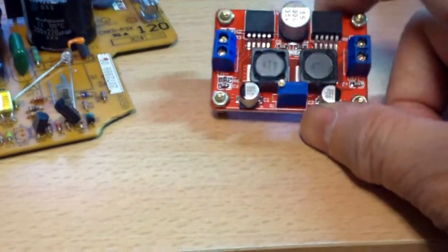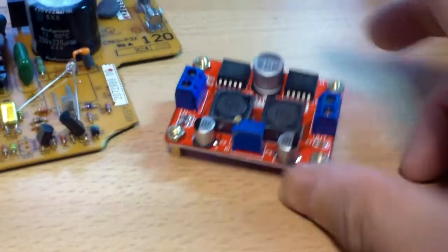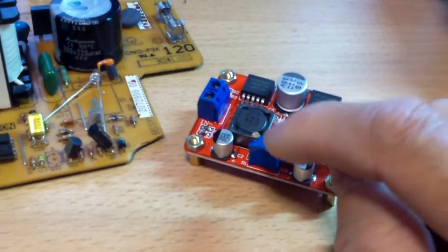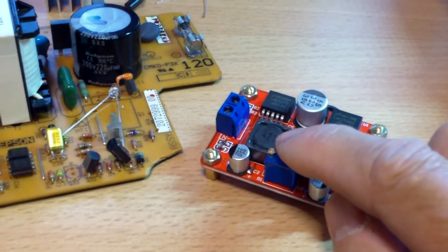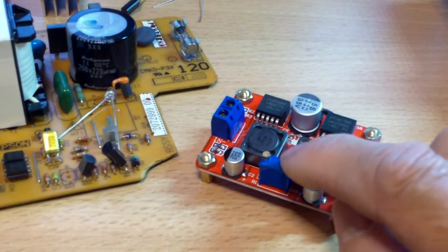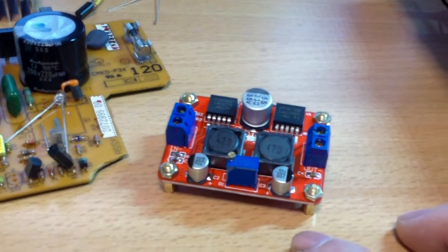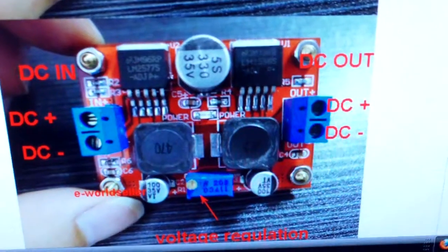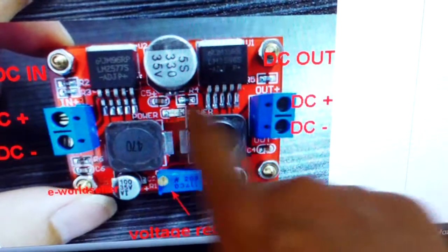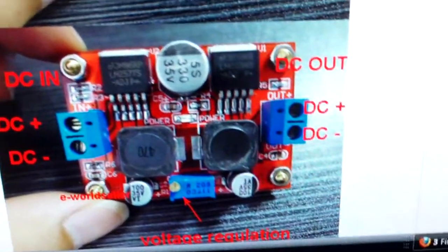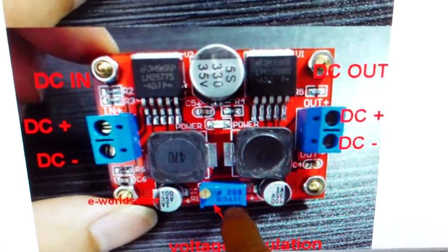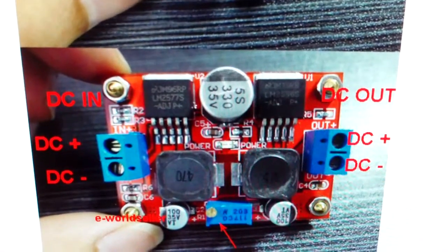Whereas if you use this to control the voltage, this part here can adjust and regulate the voltage to a predetermined voltage. Clearer here. DC in, DC out. And this is the voltage adjustment.